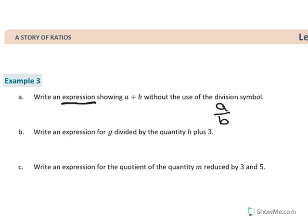For the next one: write an expression for g divided by the quantity h plus 3. First, we know we're working with g. Next, divided by means a division symbol. Then we have the word quantity — quantity means we're going to need to use grouping symbols, which are parentheses. So when we see the word quantity, we want to think about parentheses. And here it says h plus 3.